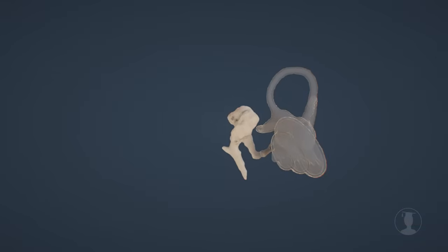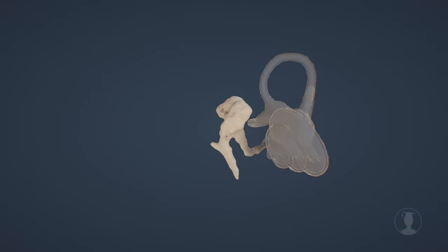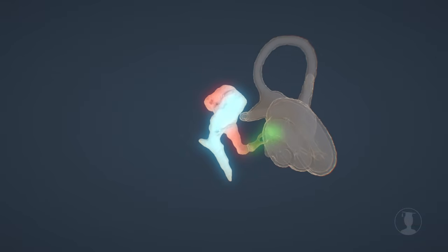Humans have three tiny ear bones, also known as auditory ossicles, which are called malleus, incus and stapes.